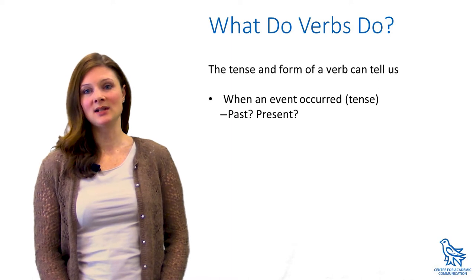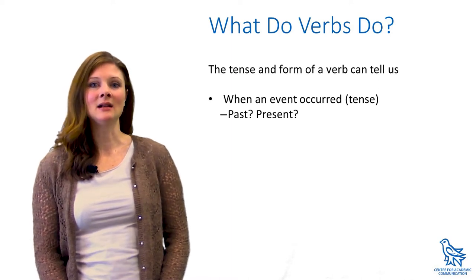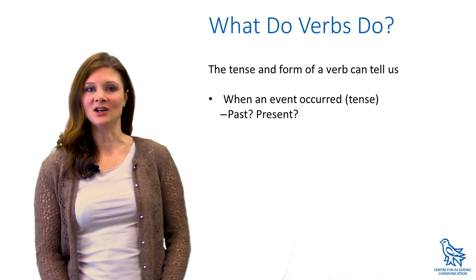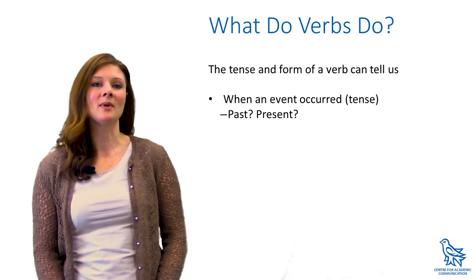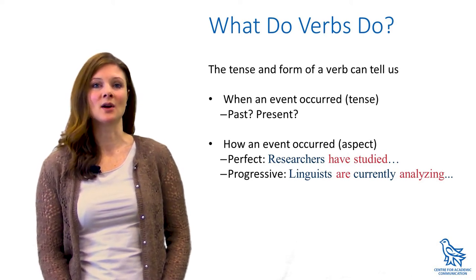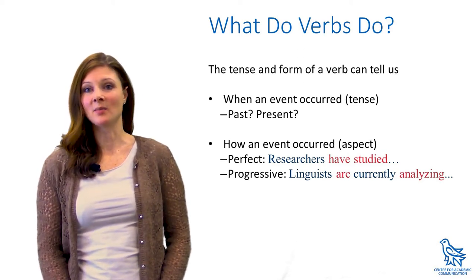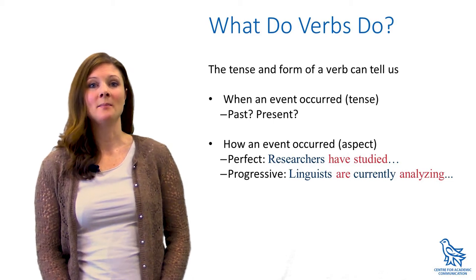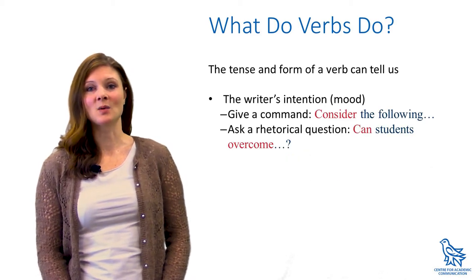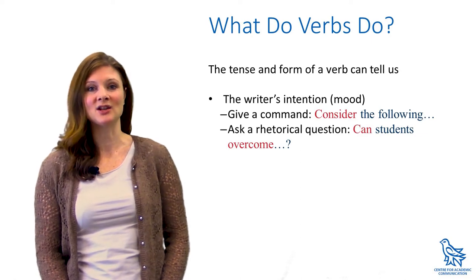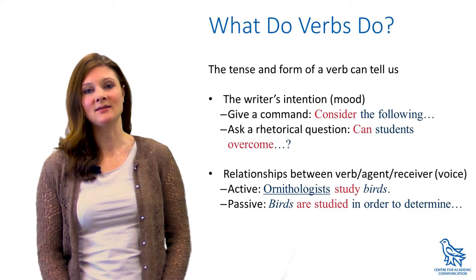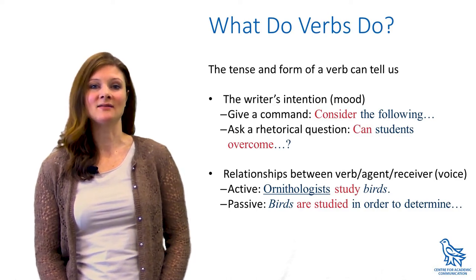Strictly speaking, tense refers only to the location of an action in time — the present or past and possibly the future. There are another set of conditions that allow us to be more descriptive about how actions happen. Aspect refers to how time passes or how events occur within a time frame, such as in the perfect or progressive forms. Mood indicates the intent of the writer to give a command, state a fact, ask a question, or pose a hypothetical situation. Voice is the relationship between a verb's agent and the receiver of the action, such as in the active and passive forms.